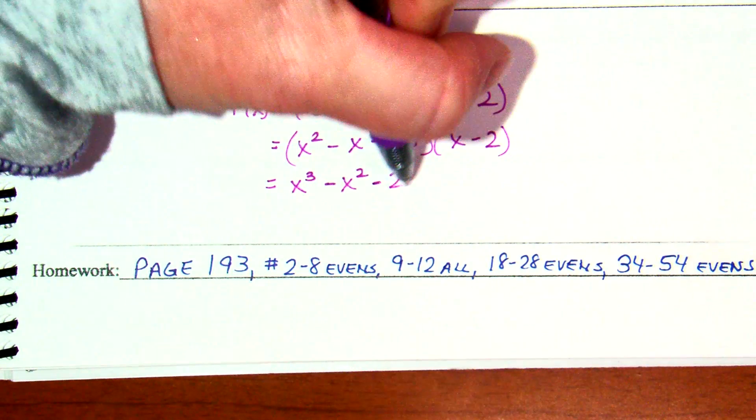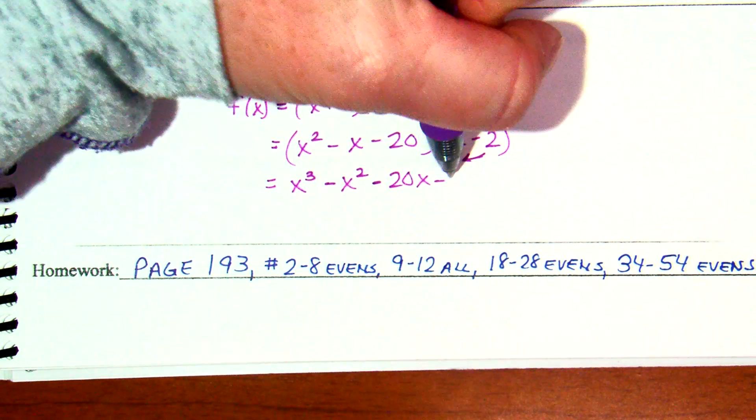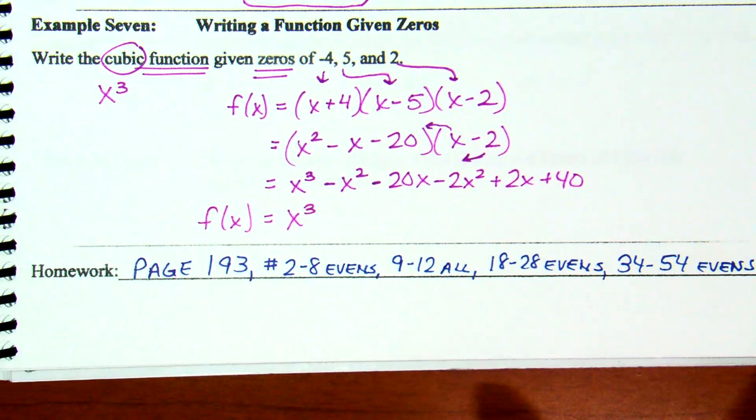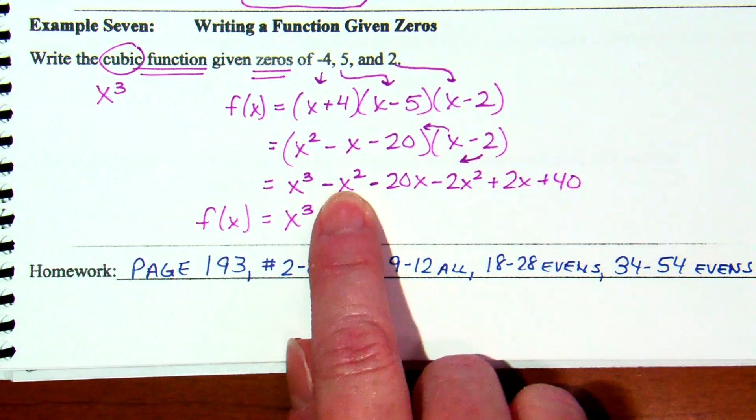So, x times x squared is x to the third. x times minus x is minus x squared. x times minus 20 is minus 20x. And then, I'm going to take my minus 2 and multiply it by everything in the other parenthesis. Minus 2x squared plus 2x plus 40.